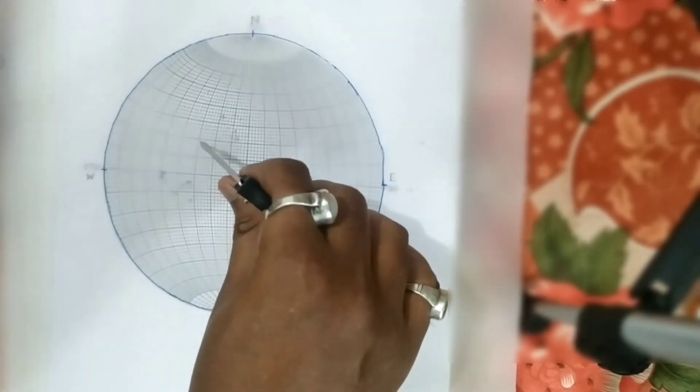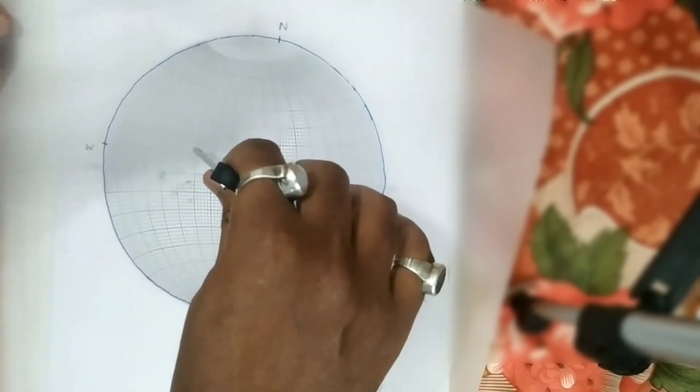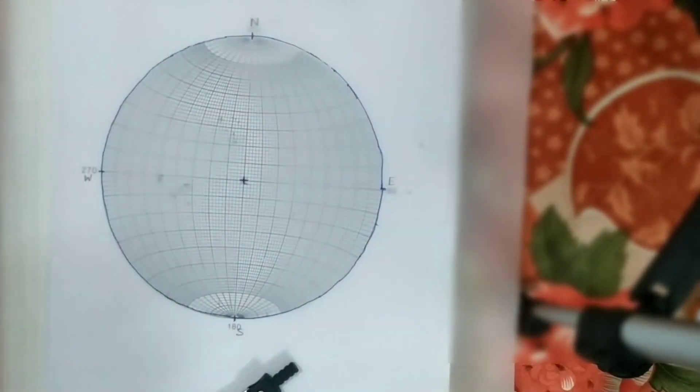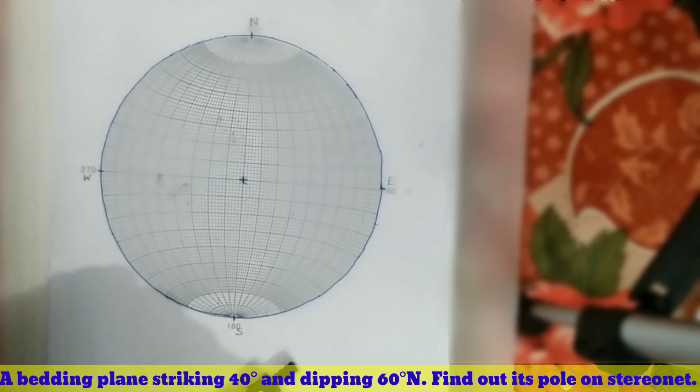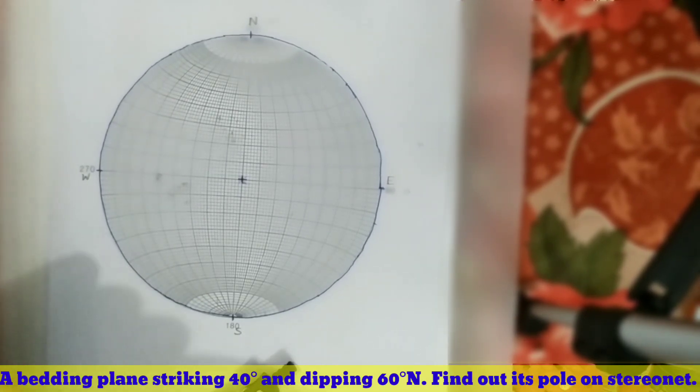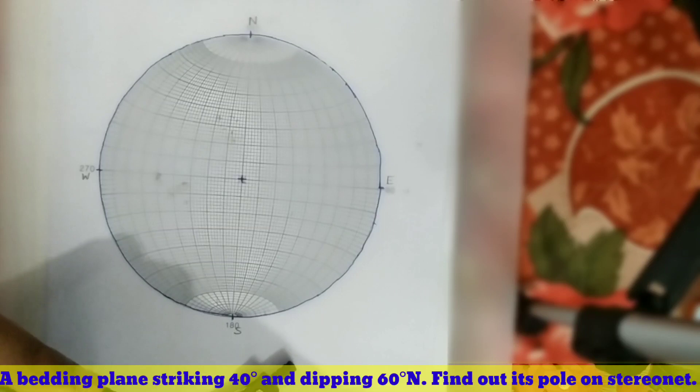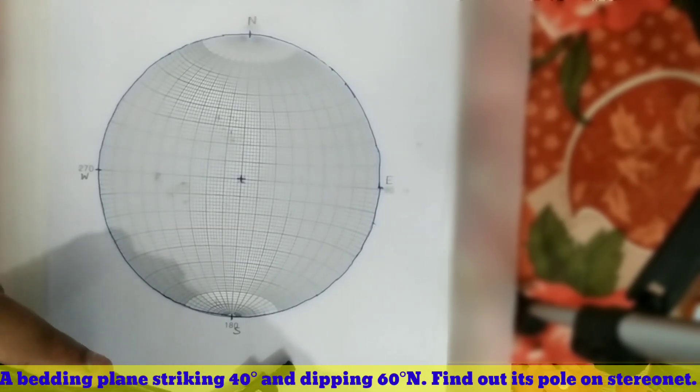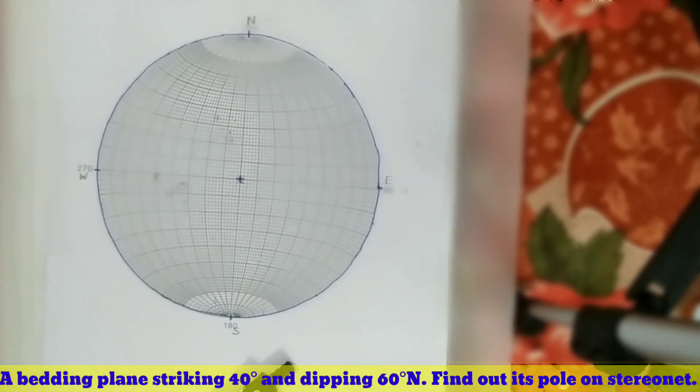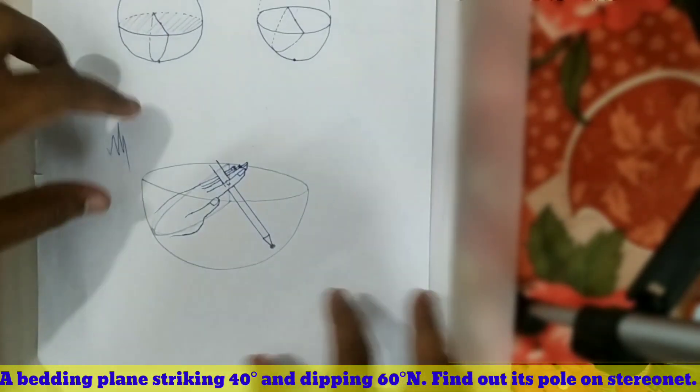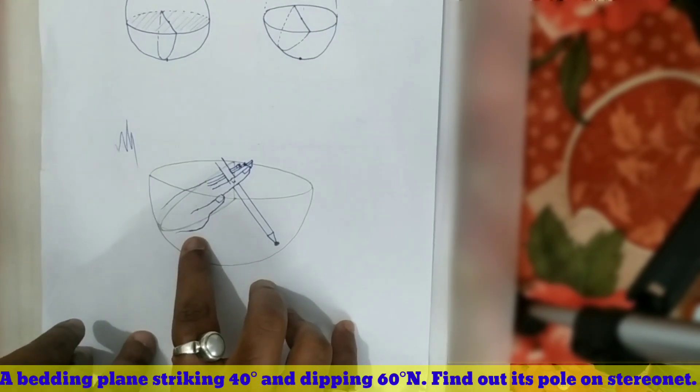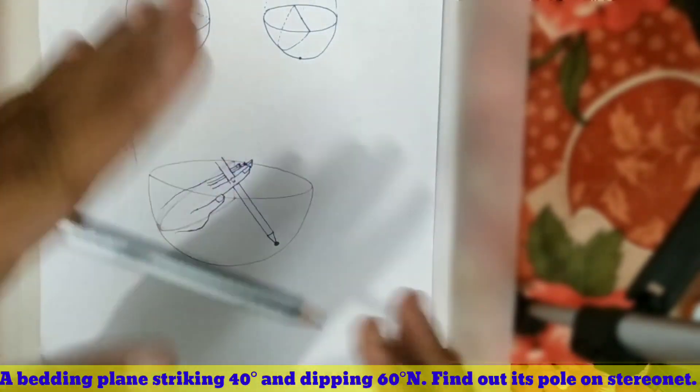Now the first problem: suppose a bedding plane striking 40° and dipping 60° northward, we have to find its pole.